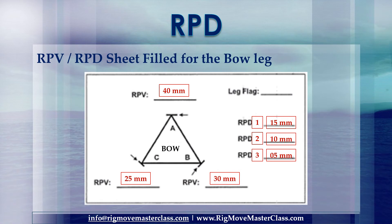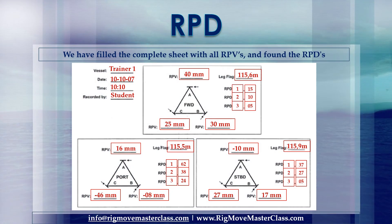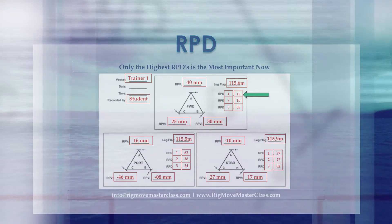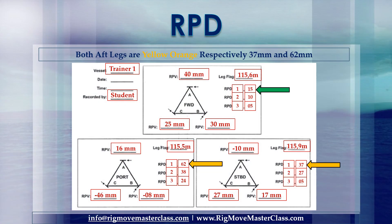RPV/RPD sheet filled for the bow leg. We have filled the complete sheet with all RPVs and found the RPDs. Only the highest RPD is the most important. The bow or forward leg is 15 mm — green. Both aft legs are yellow/orange, respectively 37 mm and 62 mm.